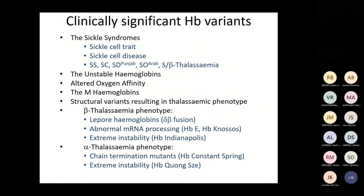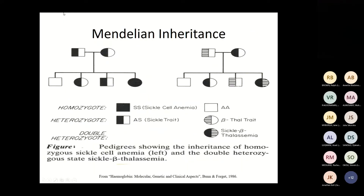Clinically significant haemoglobin variants include sickle cell trait, sickle cell disease, and sickling syndromes: SS, SC, SD Punjab, SO Arab, and S-beta thalassaemias. We also look for unstable haemoglobins, those with altered oxygen affinity, M haemoglobins, structural variants with thalassaemic phenotypes such as haemoglobin Lepore (a delta-beta fusion), abnormal mRNA processing variants like haemoglobin E and haemoglobin Knossos, extreme instability variants, and chain termination mutations such as Constant Spring.